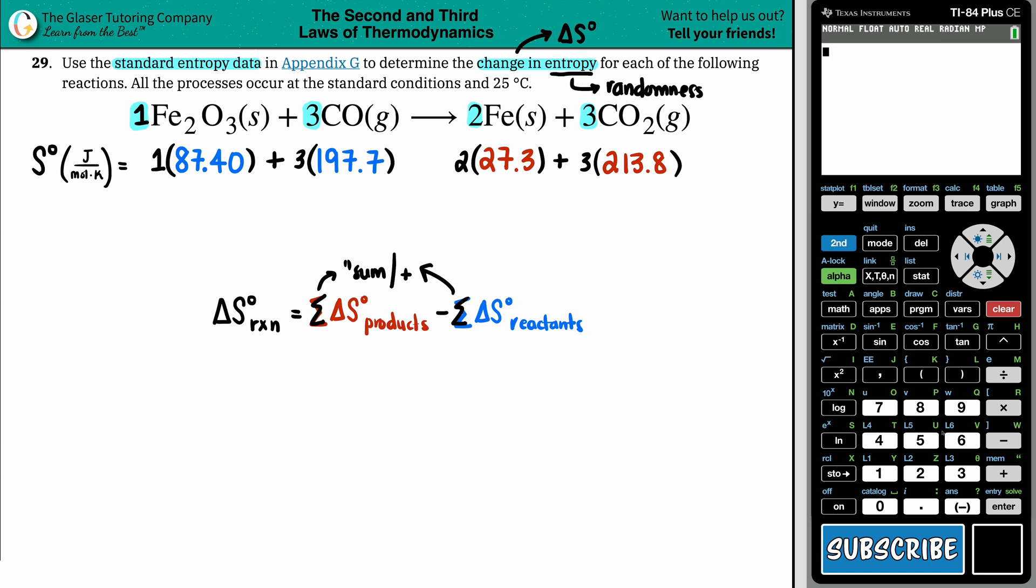So I'm going to do the reactants first. So I got 197.7, I'm going to times up by three. And then I'm going to add that to the 87.4. You could put 404, same thing. So the reactant side is 680.5. Let's do the same thing for the product side. So 27.3 times that by two, plus we could do three times 213.8. And this one, I get 696 products minus reactants.